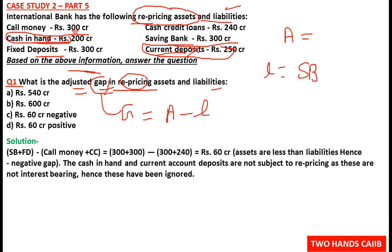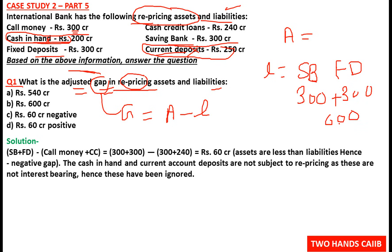Saving bank and fixed deposits are liabilities because the bank pays interest to those customers — around 4% on saving bank and 7% to 7.8% on FDs. Saving bank deposits are 300 crore and fixed deposits are 300 crore. Total liabilities = 300 plus 300 = 600 crore.